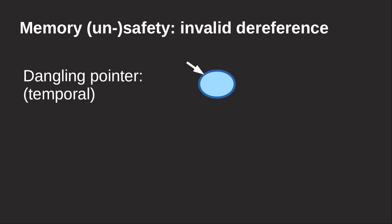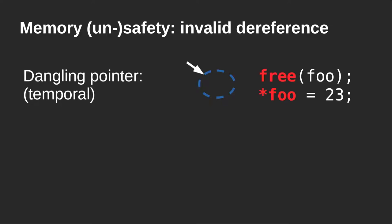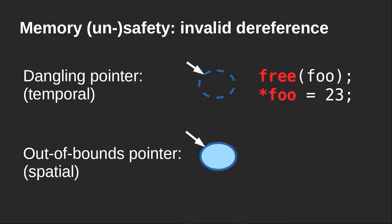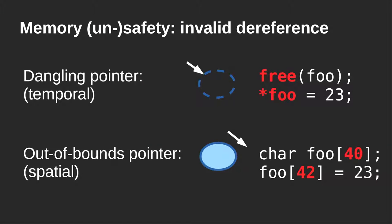Let me take a step back and talk about the different memory safety problems we are facing. At the core of any security vulnerability there is an invalid dereference — either through a dangling pointer, what we call a temporal reference, where a pointer once pointed to a valid allocated object that was later freed and is still accessed after deallocation, or an out-of-bounds pointer, which we call spatial memory corruption, where the pointer started inside a valid object and moved outside its correct bounds.